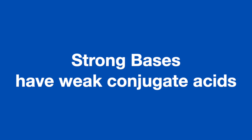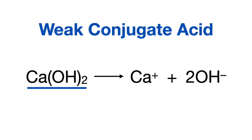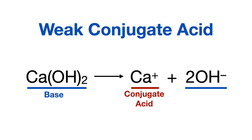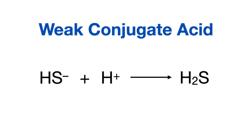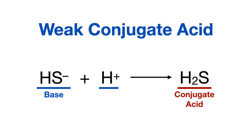Strong bases have weak conjugate acids. With Arrhenius bases, this means that if the basic compound releases hydroxide ion into solution and the conjugate acid cannot rebind to the hydroxide ion, it's a weak conjugate acid — meaning calcium hydroxide is a strong base, leaving hydroxide in solution and creating a basic environment. With Bronsted-Lowry and Lewis bases, when the base accepts a proton and forms a bond with the hydrogen and the conjugate acid does not break the bond releasing the positively charged hydrogen back into solution, it's a weak conjugate acid, making the sulfide ion a strong base. Essentially, the base uptakes acid from solution, making the solution more basic.